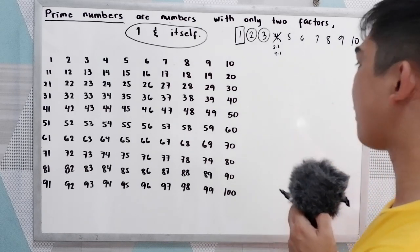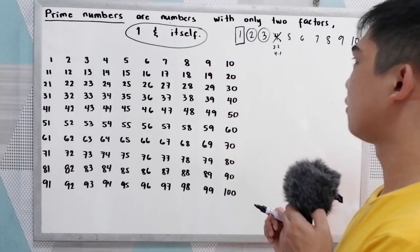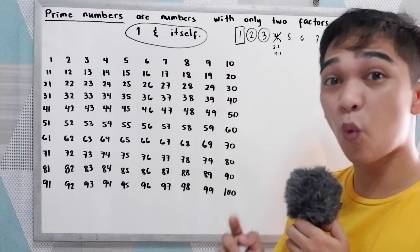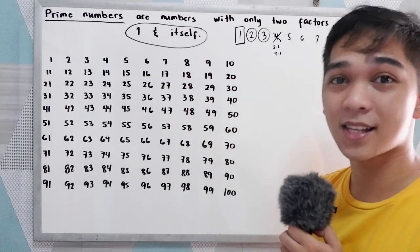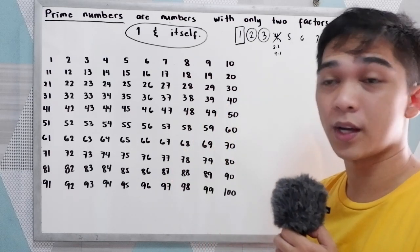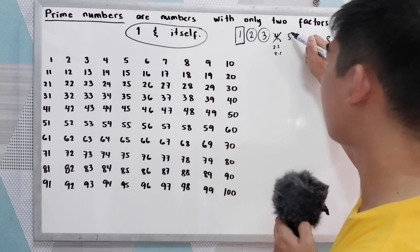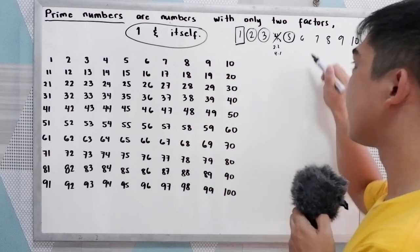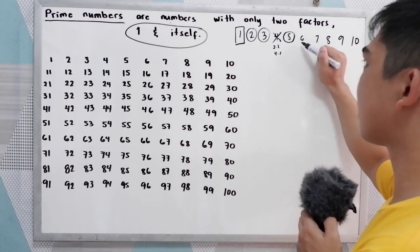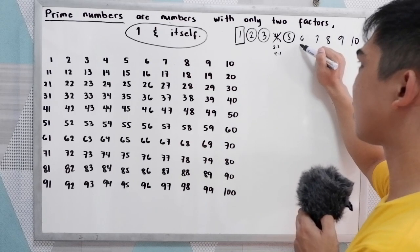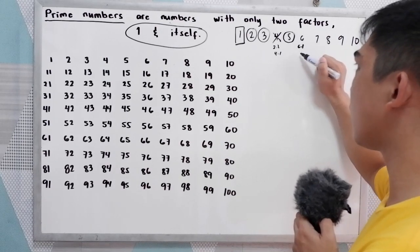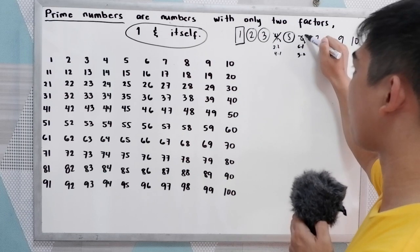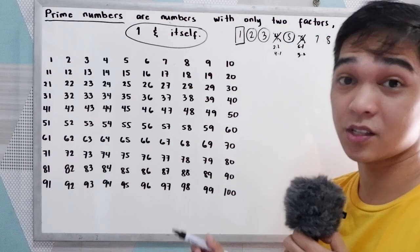How about five? Five has only two factors — one and itself, five and one. So five is a prime number. Six has the factors of six times one and three times two. So it is not a prime number. It is a composite.